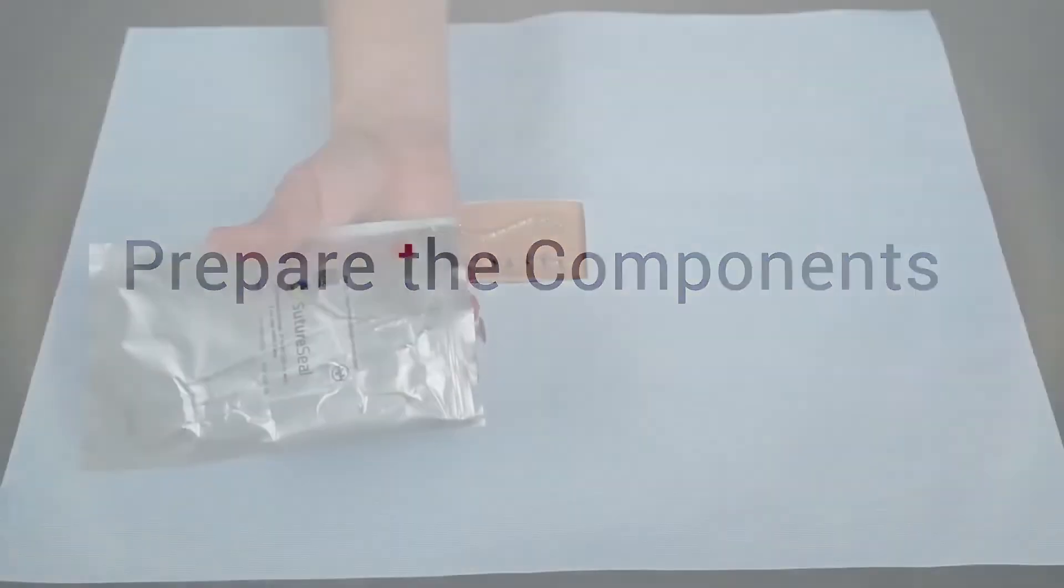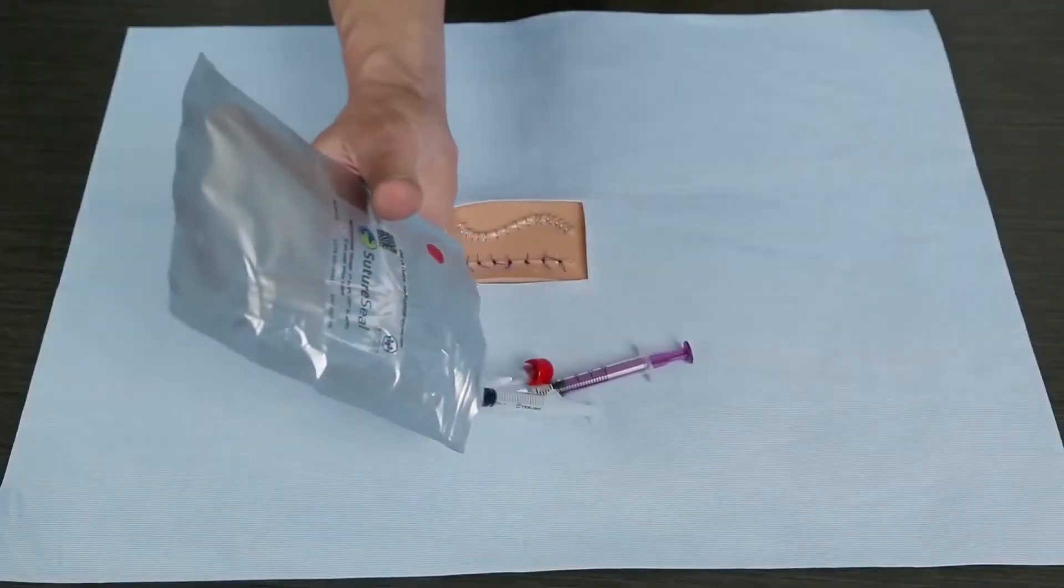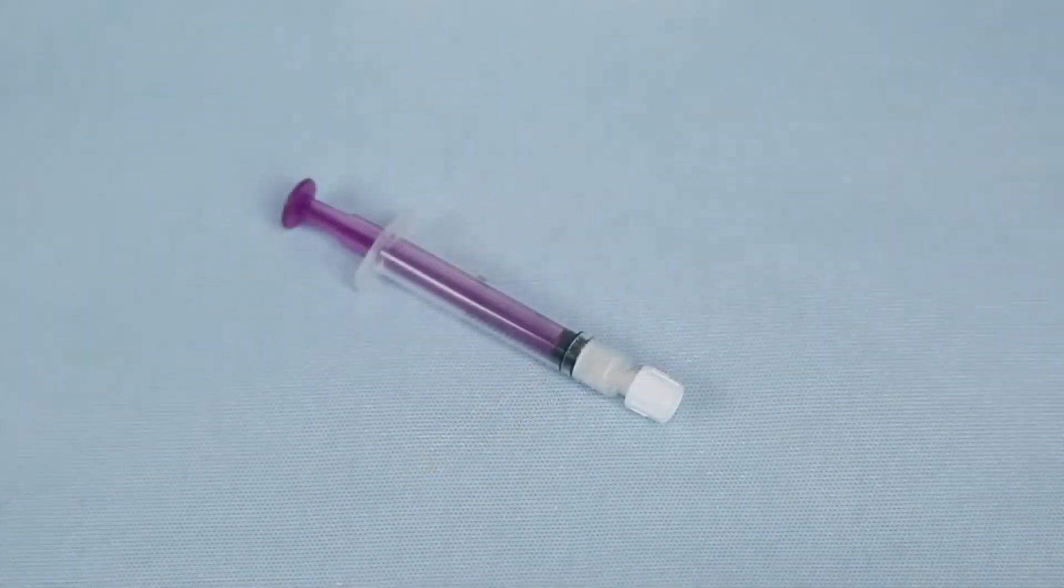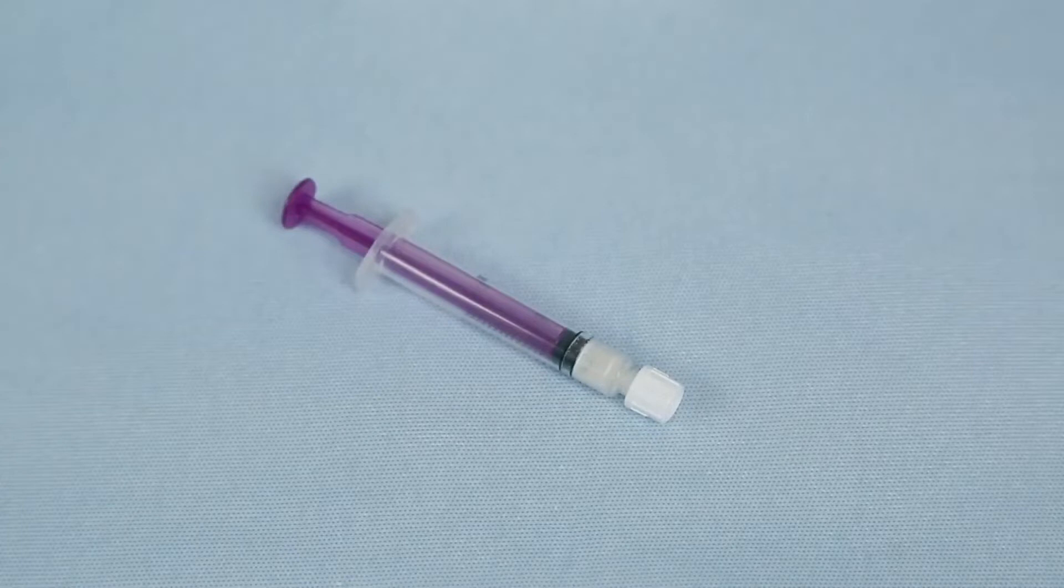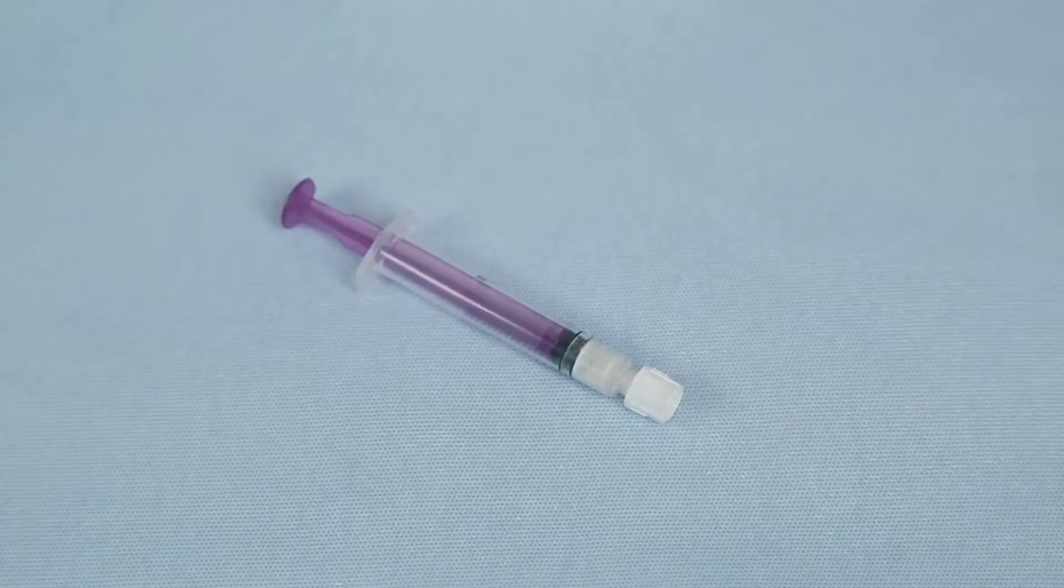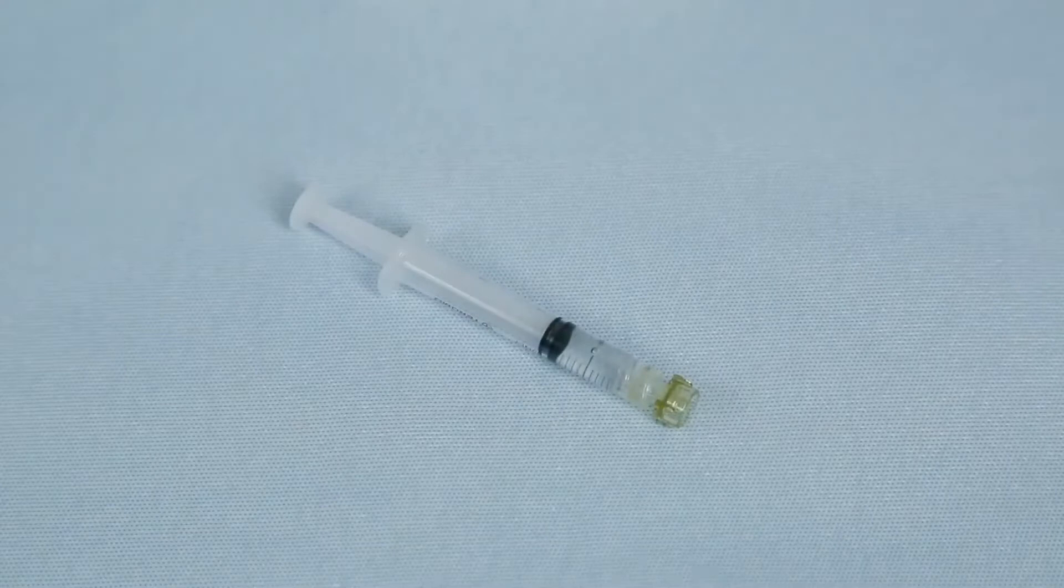The first step is to prepare the components. Open the foil pouch and remove the three components: two syringes and a tube case containing the application brush. One syringe is a 2.5 milliliter syringe containing 50 milligrams solid white powder hydrogel polymer and the other is a 3 milliliter syringe containing liquid phosphate buffer solution.